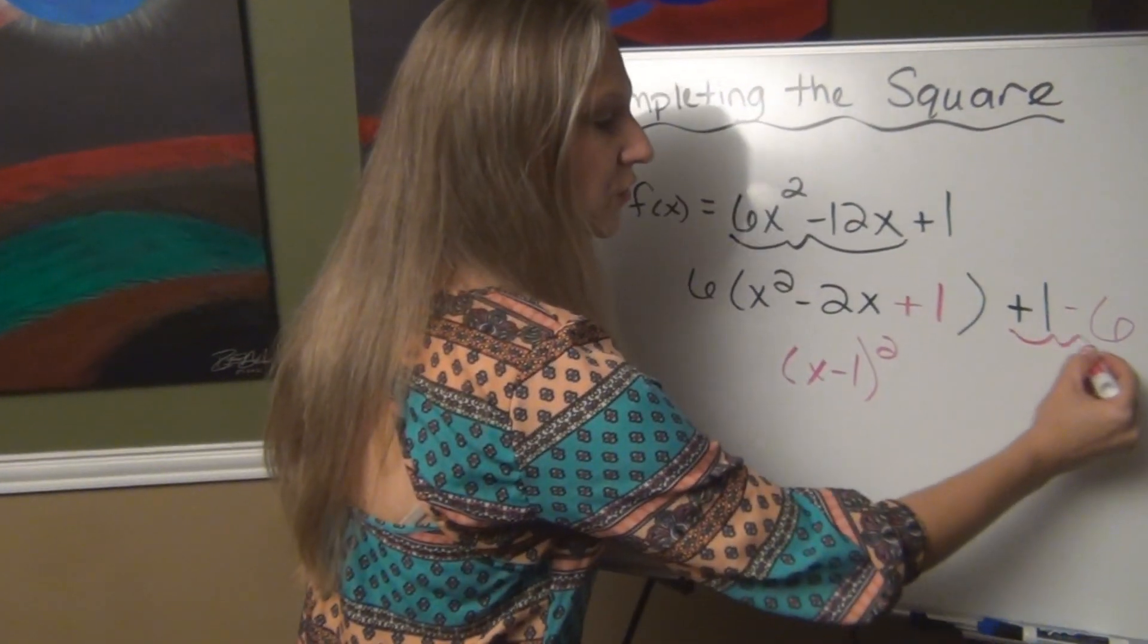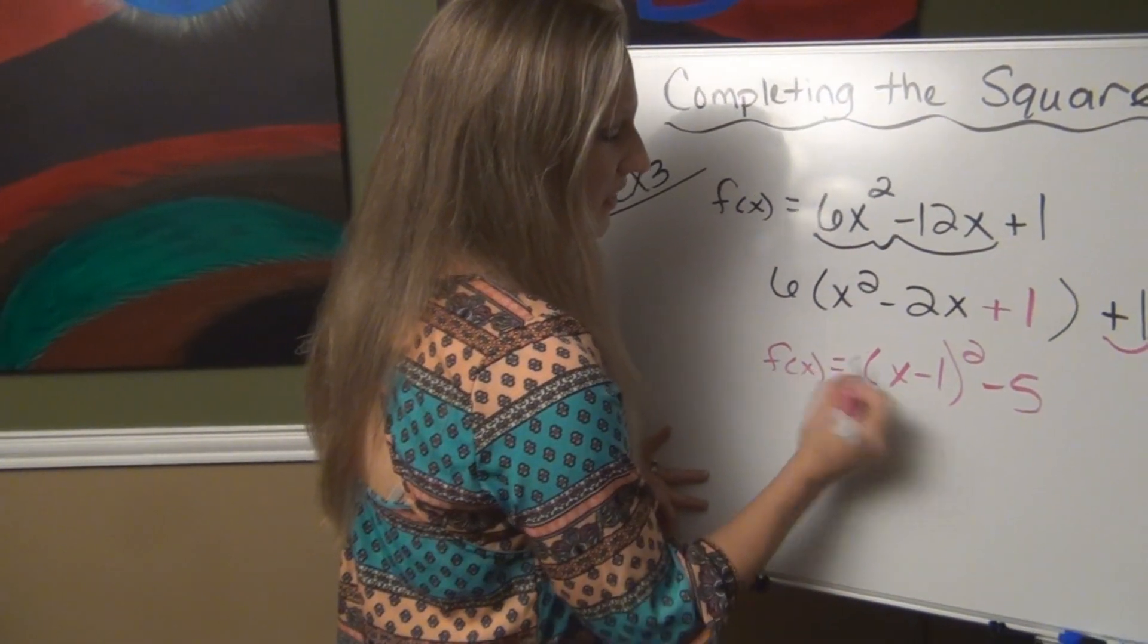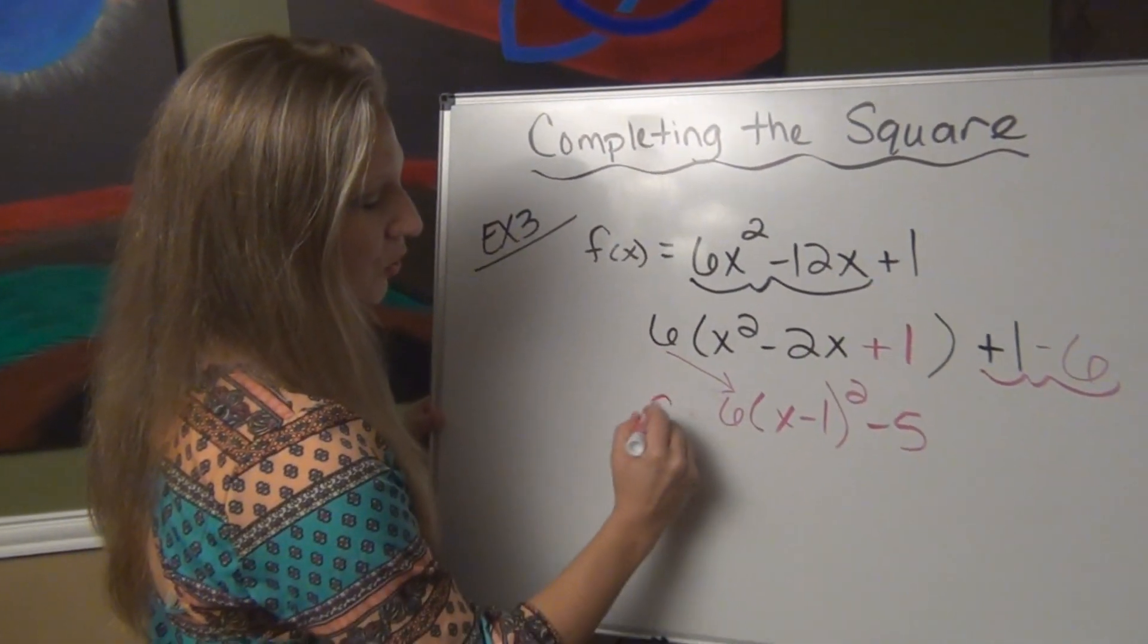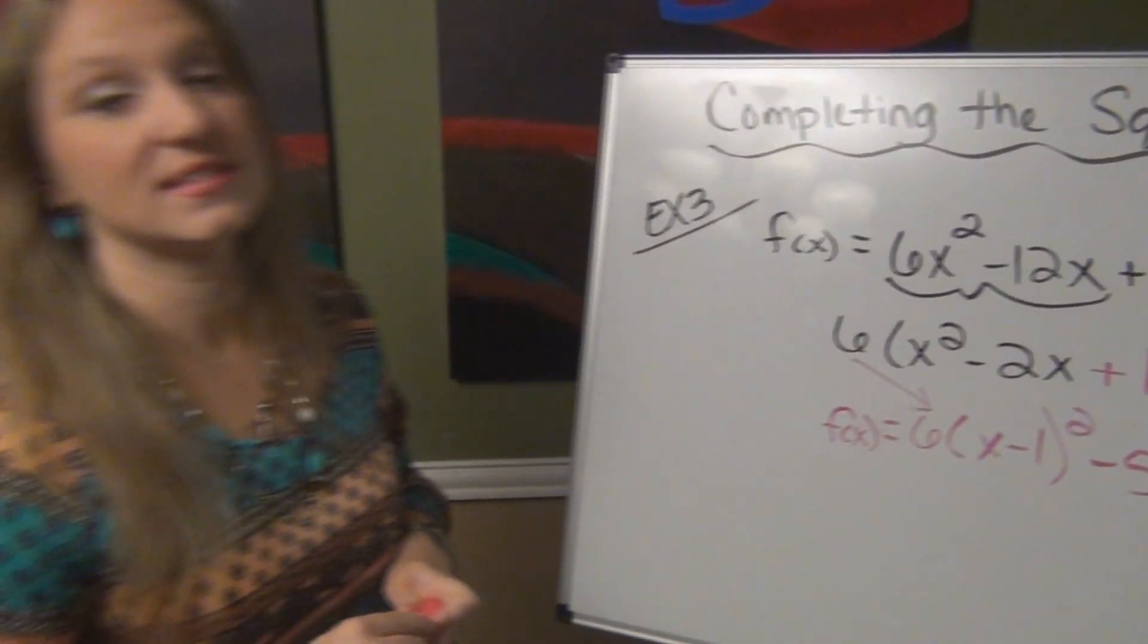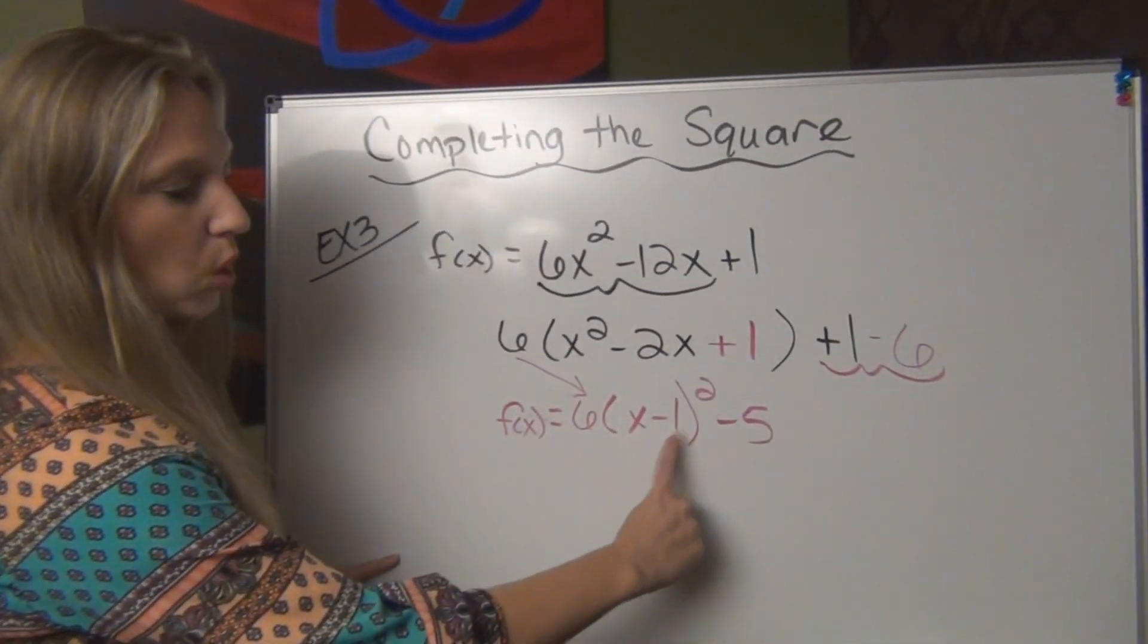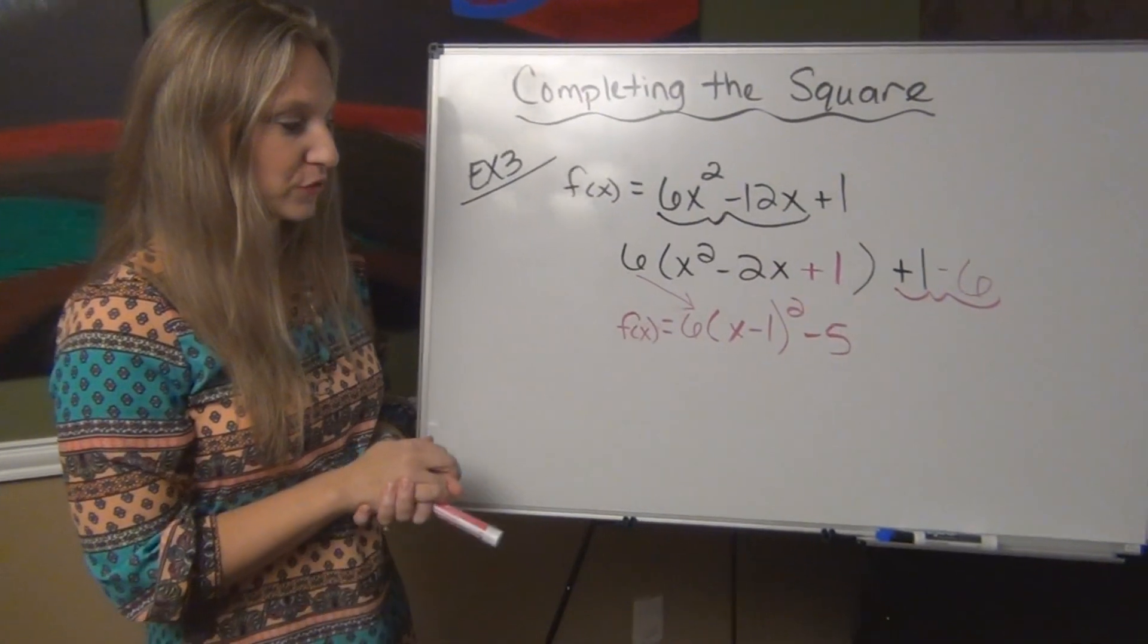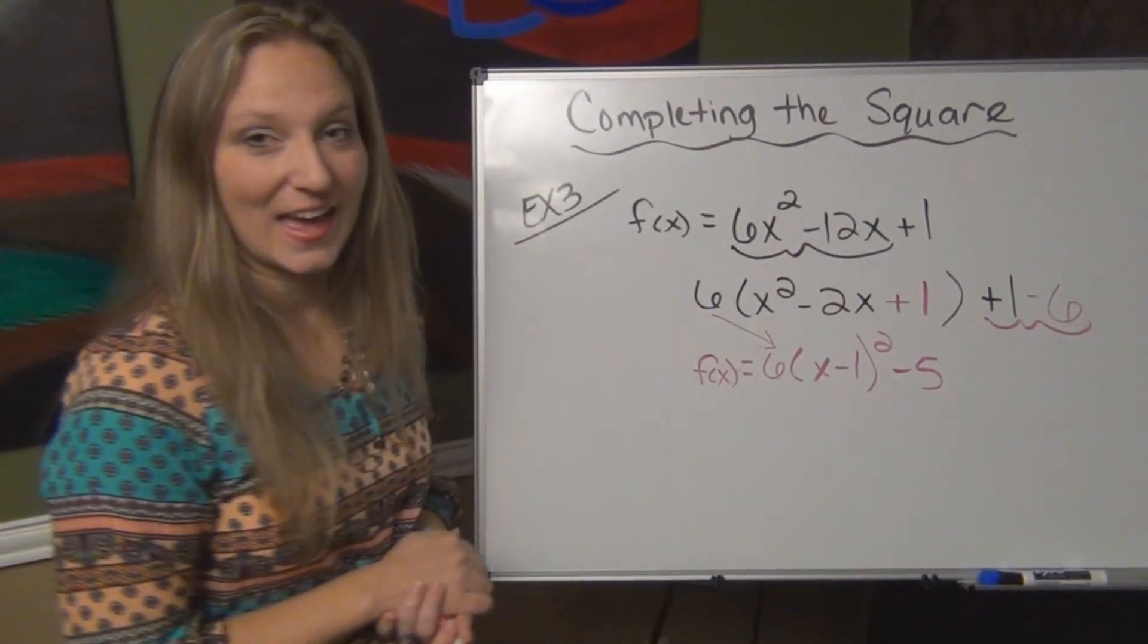So when I combine these over here, I now have minus 5. And this 6 is still part of my equation and this is my new vertex form of my equation. I have a vertex at 1, negative 5 and it is stretched vertically by 6. That parabola is stretched vertically by 6. This is going to be your a, your h and your k. We have one example left.